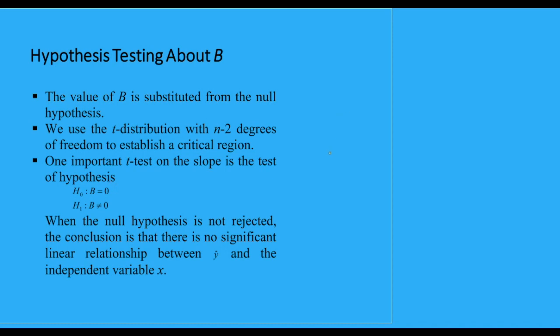Okay, now what happens when B is equals to zero? So we have Y equals to A plus BX plus the error term, right? So what happens when B is equals to zero? When B is equals to zero, then your dependent variable Y is no more dependent on the independent variable X, right? It means that there is no significant linear relationship between Y and X.